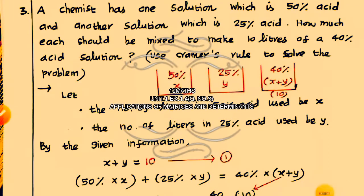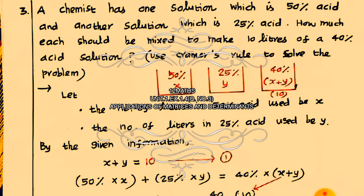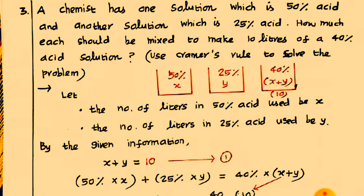Exercise 1.4, question number 3. A chemist has one solution which is 50% acid and another solution which is 25% acid. How much of each should be mixed to make 10 liters of a 40% acid solution? Use Cramer's rule to solve the problem.